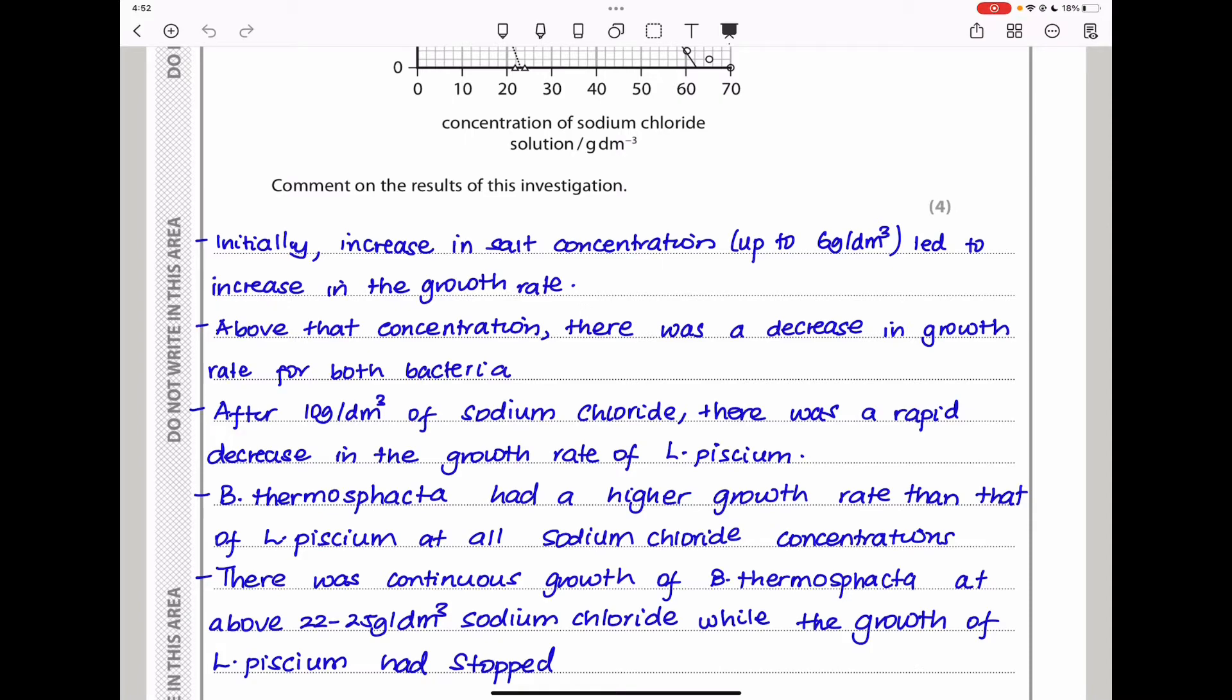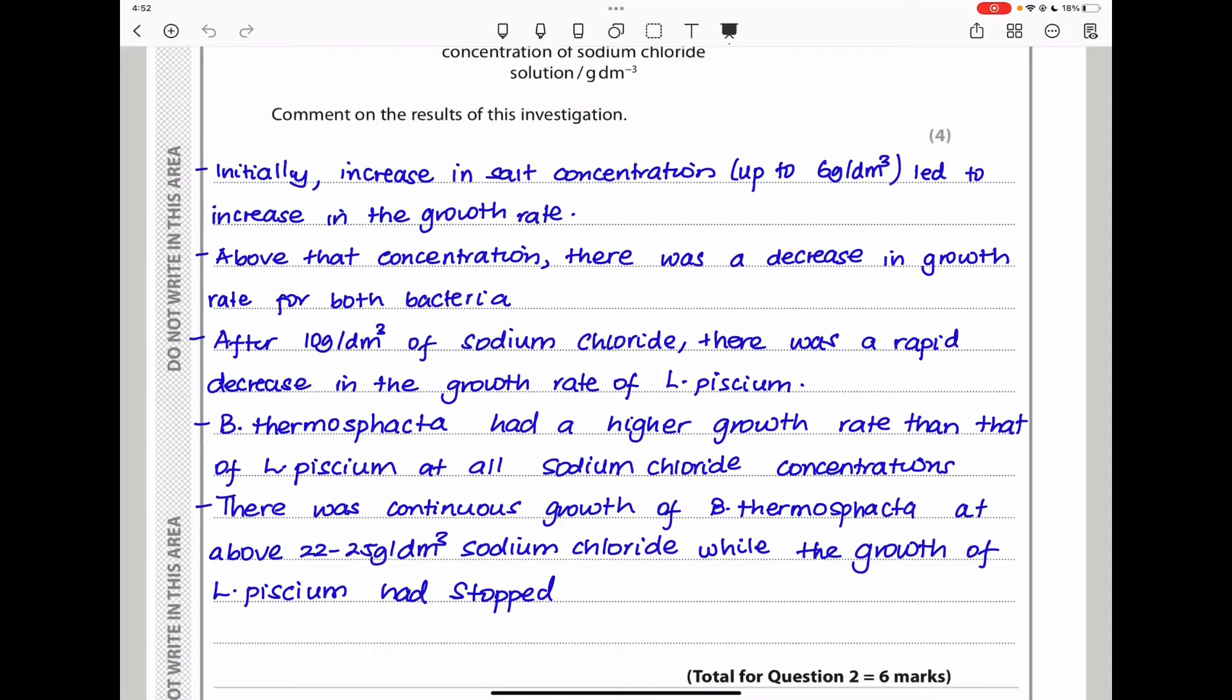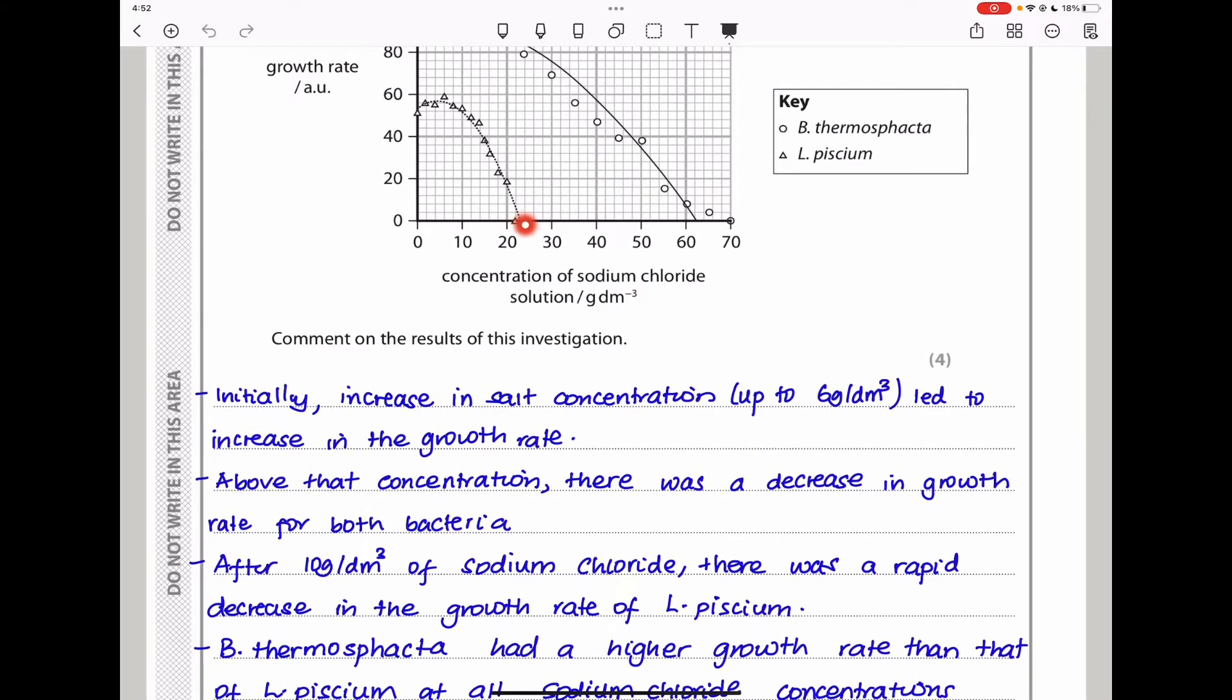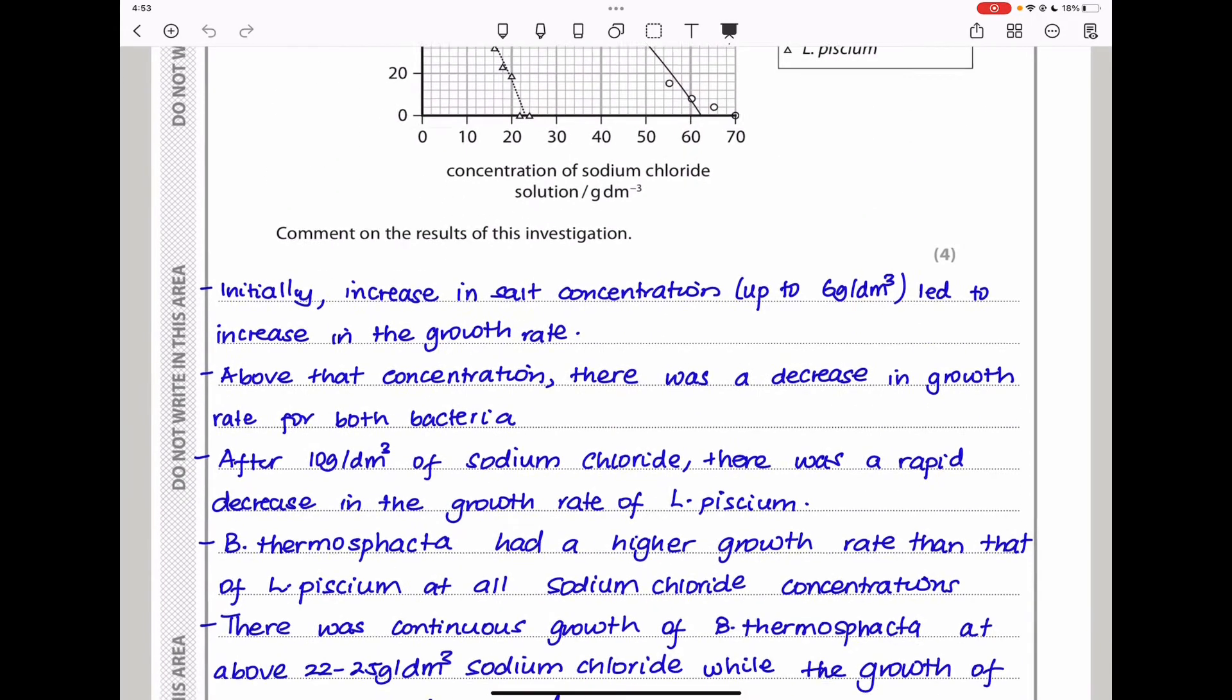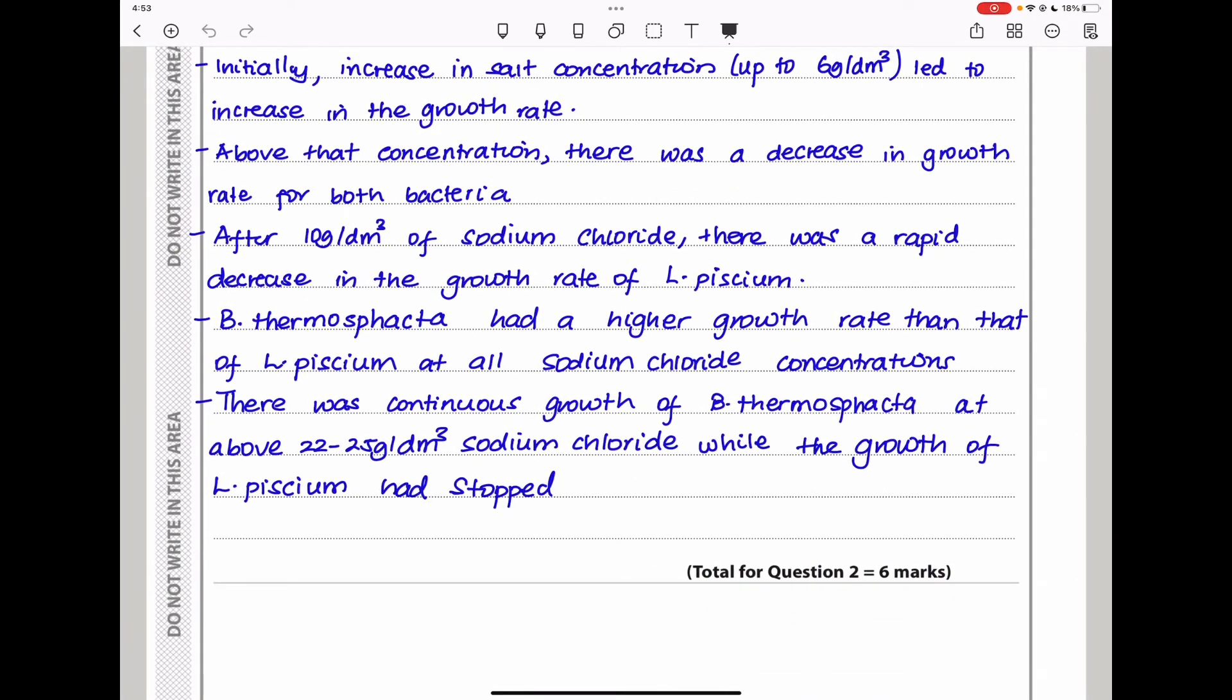B. thumosfactor had a higher growth rate than L. PCM at all sodium chloride concentrations. There was continuous growth for B. thumosfactor at above 22 to 25 grams per decimeter cubed of sodium chloride, where the growth of L. PCM had stopped. This brings us to the end of question 2.